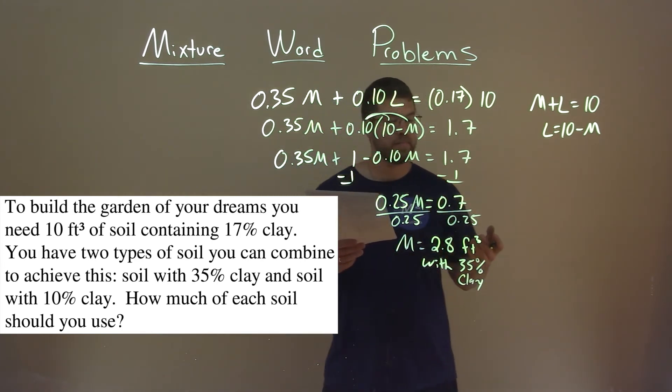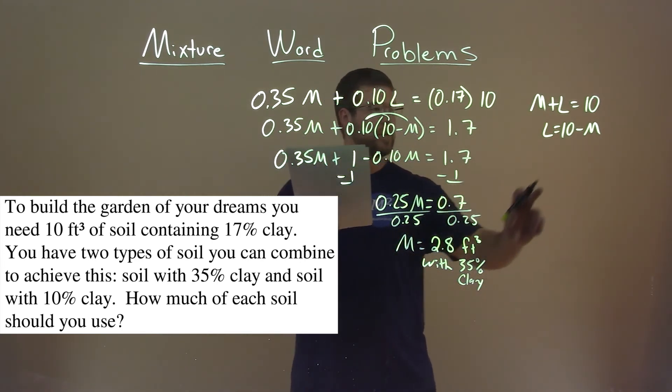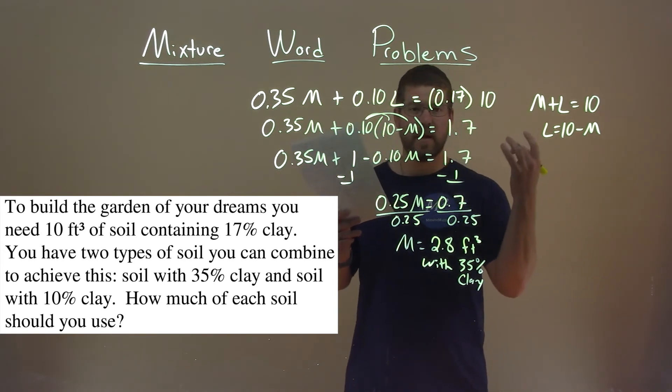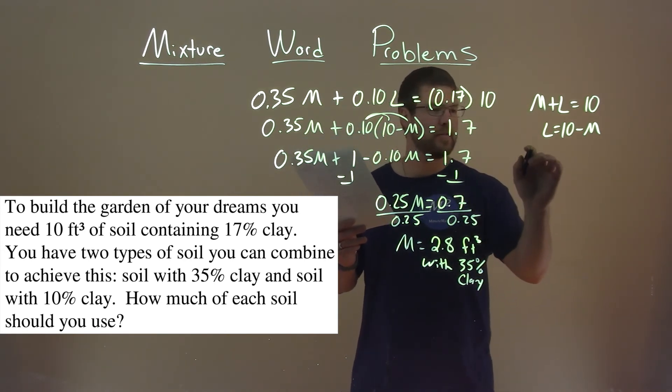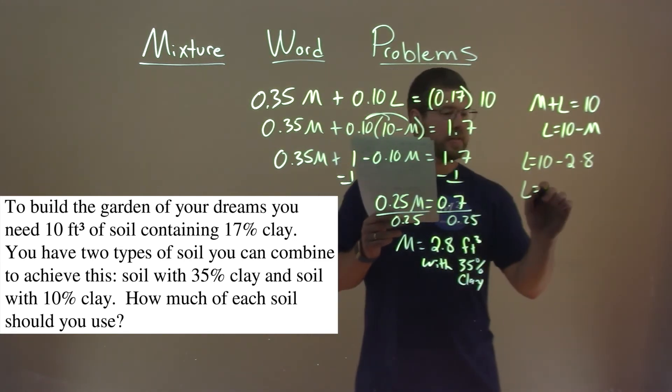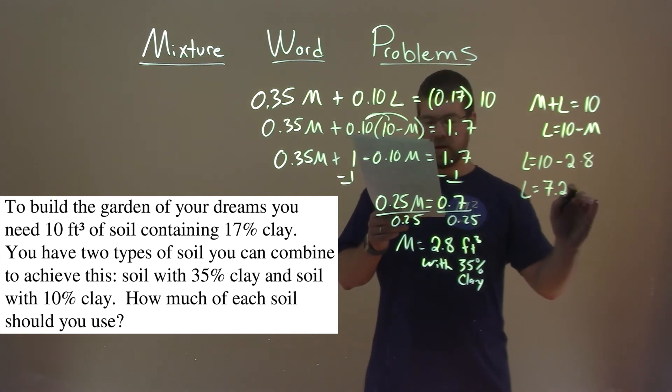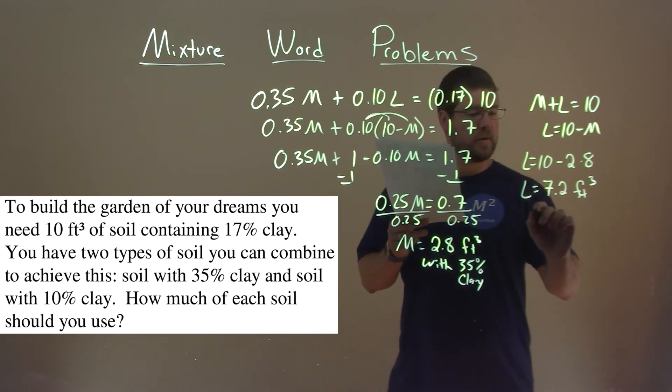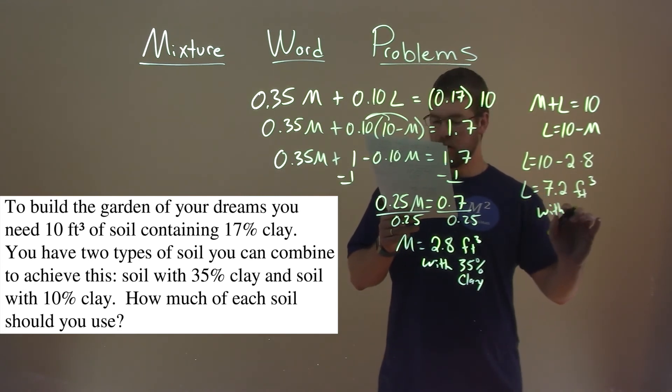But we have to find the other one. Well, at 2.8, we can plug into this equation here to get the amount of cubic feet for L, the less mixture. So L equals 10 minus 2.8, and L equals 7.2. So we have 7.2 cubic feet with our 10% clay, the less percent mixture.